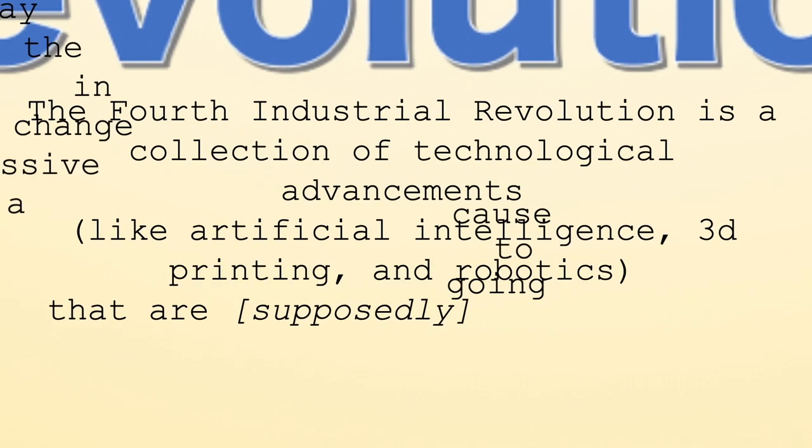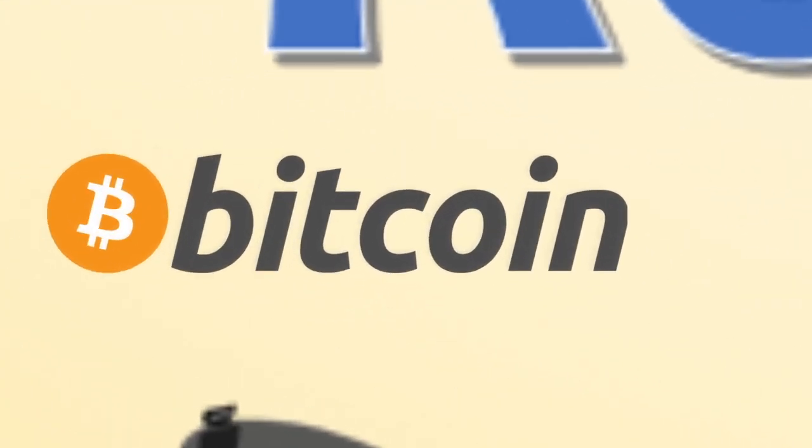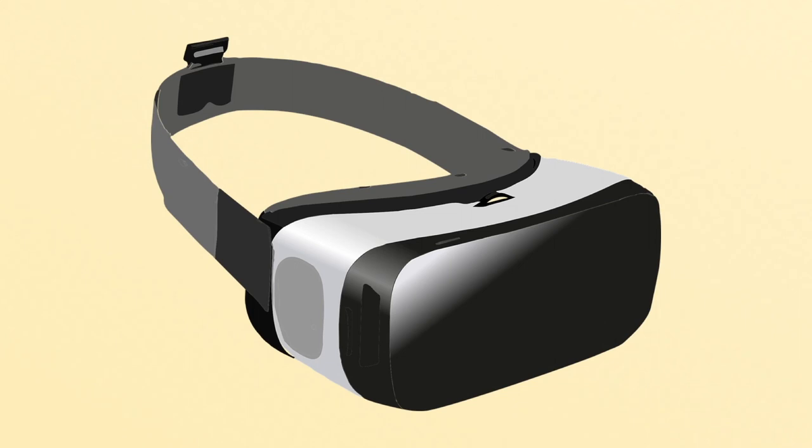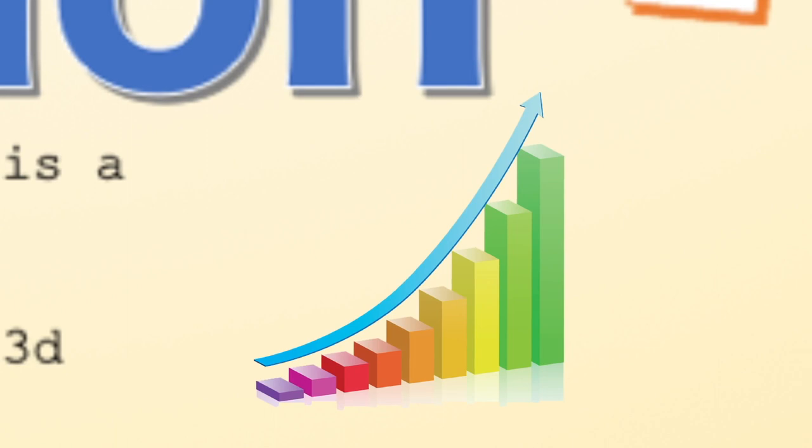The Fourth Industrial Revolution is a collection of technological advancements like artificial intelligence, 3D printing, and robotics that are supposedly going to cause a massive change in the way we live. Whether it's a decentralized blockchain monetary system like Bitcoin or a virtual reality environment offering an immersive experience, these technologies will have a major impact on people's lives.